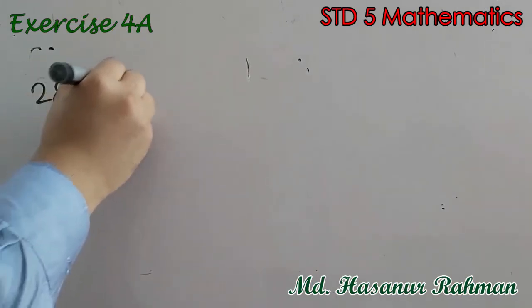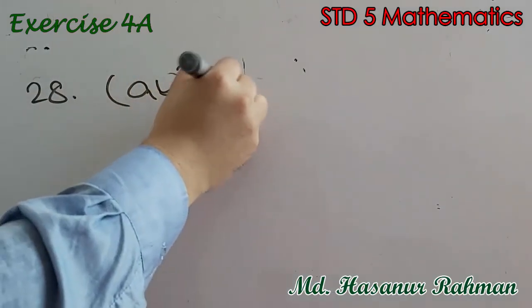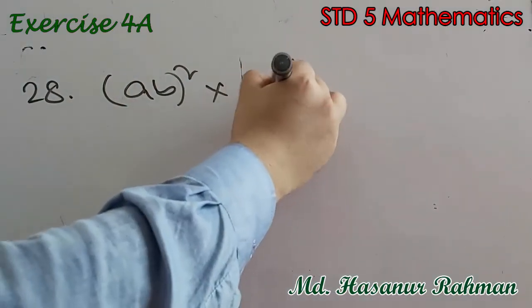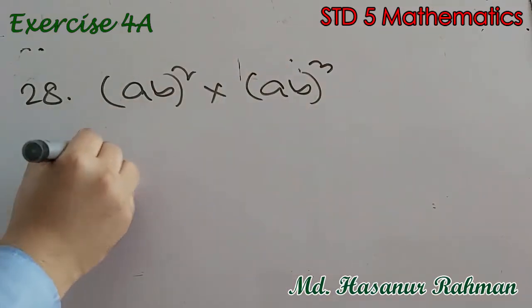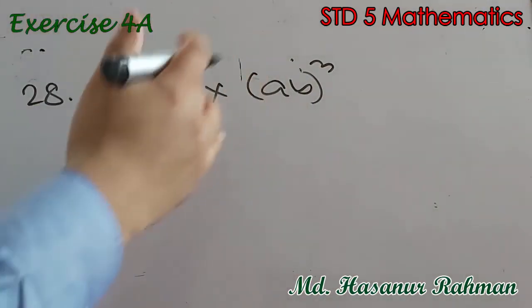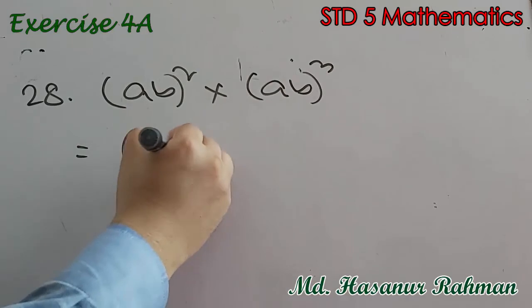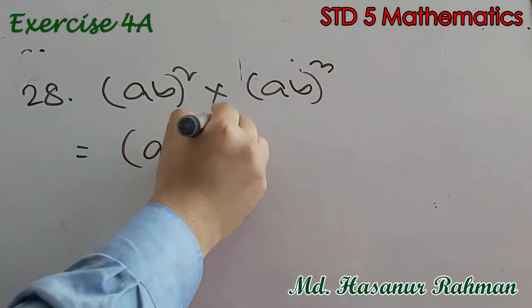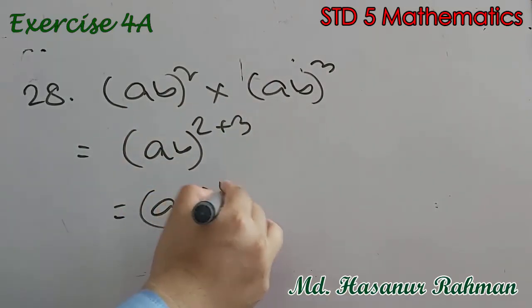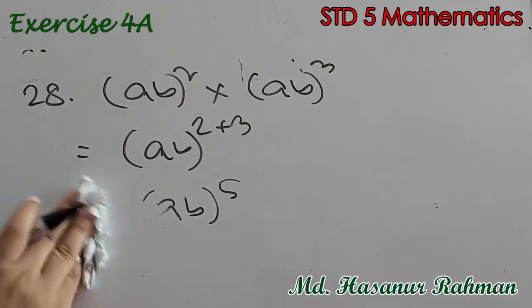Now number 28 says ab whole squared into ab whole cubed. Since both bases are the same (ab), we add the powers: ab to the power 2 plus 3, that is ab to the power 5, and that is the answer of number 28.